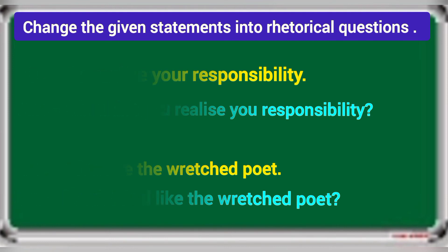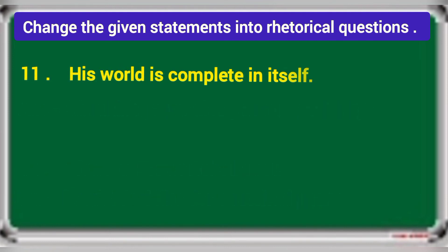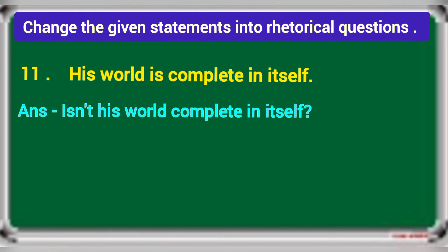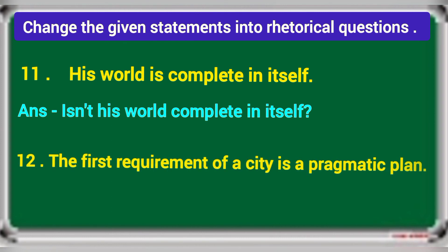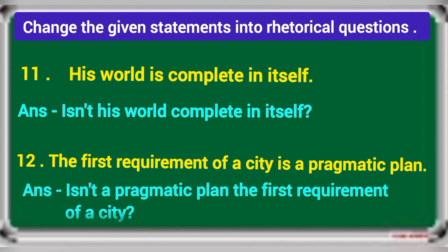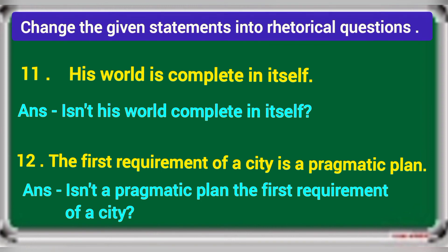Eleventh: his world is complete in itself. The rhetorical question is: isn't his world complete in itself? Twelfth: the first requirement for a city is a pragmatic plan. The rhetorical question is: isn't a pragmatic plan the first requirement of a city?